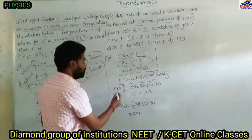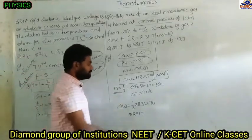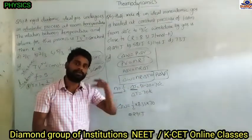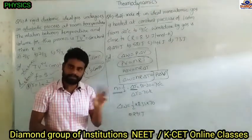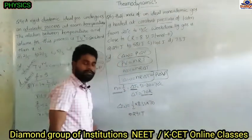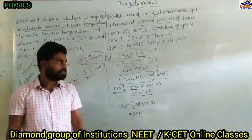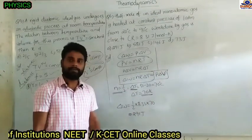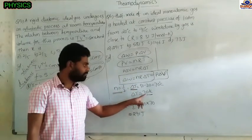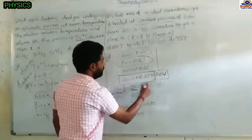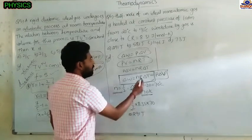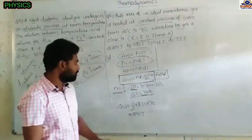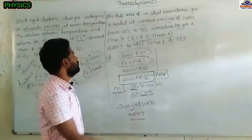At constant pressure, work done W = P ΔV = nR ΔT. Here n = 1/2 mole, ΔT = 90 − 20 = 70 K, and R = 8.31 J/mol·K. So W = (1/2) × 8.31 × 70 ≈ 291 Joules. Option A is the right answer.